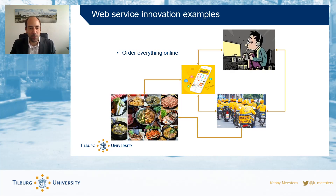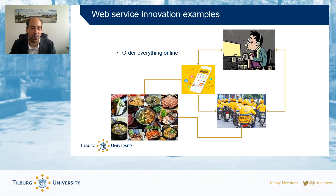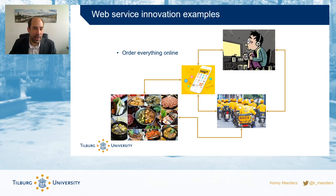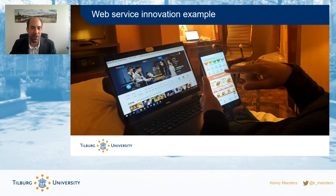An example of how all these elements combine is again from China, where you can order pretty much everything online. If you're at home and hungry, you can grab your mobile phone, browse a large selection of dishes, and have them delivered in a very short time frame from all kinds of restaurants. You can order, track how the food is being delivered, and see it coming to you in real time.